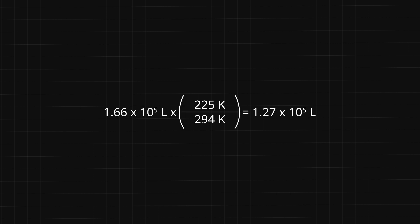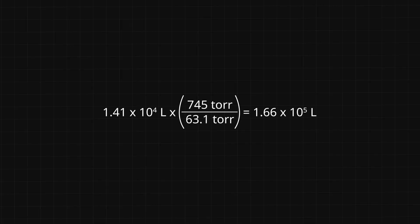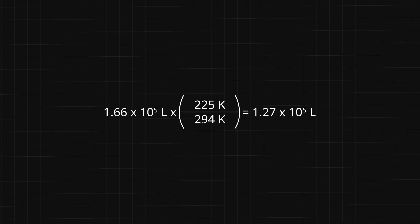Here, we did this calculation in a stepwise manner, considering first pressure and then temperature. For the change in pressure: 1.41 × 10⁴ liters × (745 torr ÷ 63.1 torr) = 1.66 × 10⁵ liters. Then for the change in temperature: 1.66 × 10⁵ liters × (225 Kelvin ÷ 294 Kelvin) = 1.27 × 10⁵ liters. But we could have done this all at once by stringing all our ratios together.